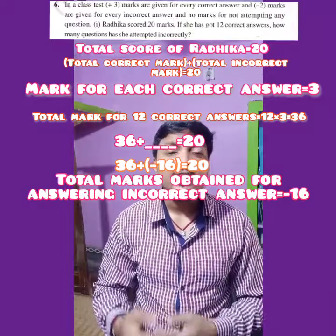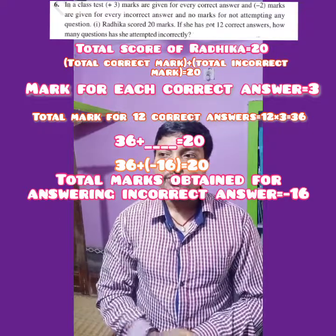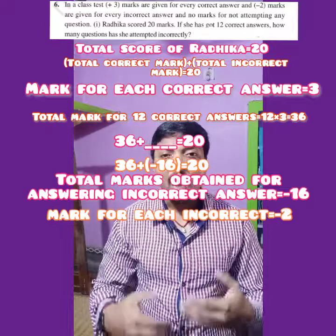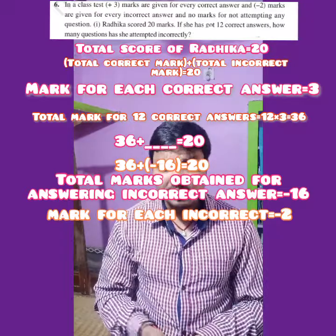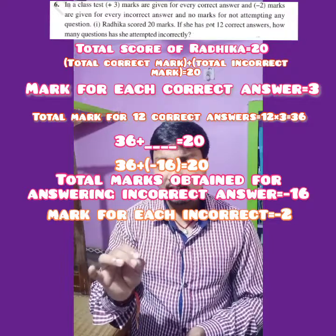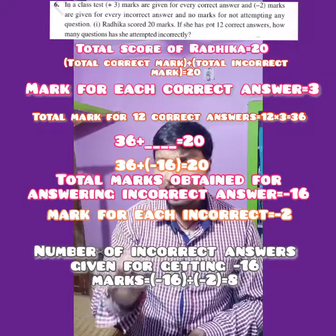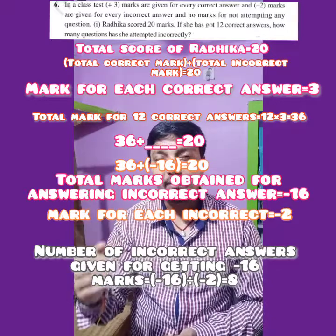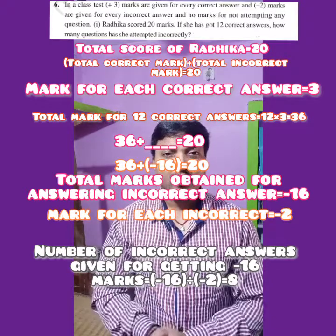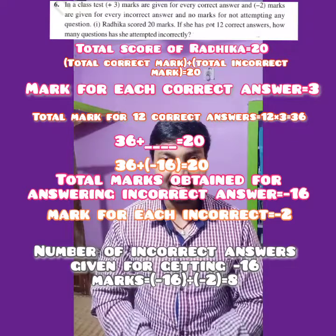Now we need to find how many incorrect answers Radhika gave. For one incorrect answer you get minus 2, so the number of incorrect answers equals minus 16 divided by minus 2, which equals 8. So Radhika gave 8 incorrect answers.